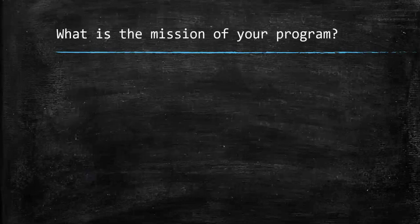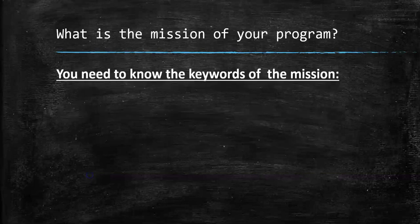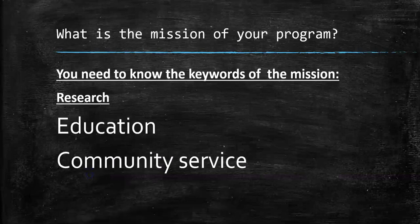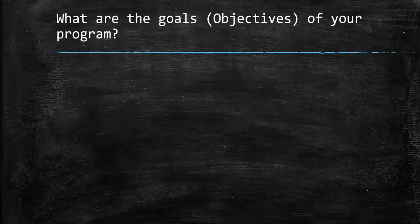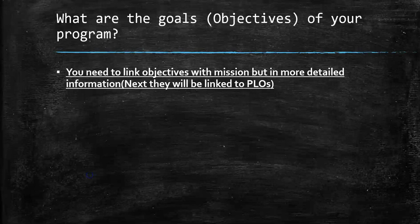What is the mission of your program? You need to know the keywords of the mission — for example, research, education, community service. There is no need to memorize your mission word by word, but you have to know what it is about. The main keywords of your mission will help you explain and understand what your mission is. What are the goals and objectives of your program? You need to link objectives with the mission in more detailed information, and next they will be linked to the program learning outcomes.